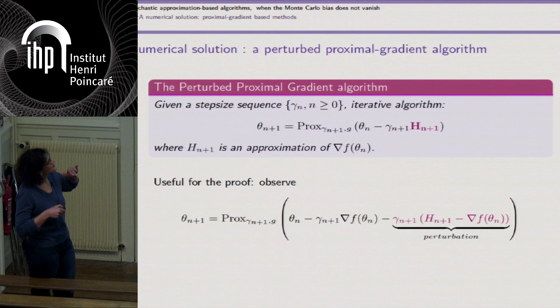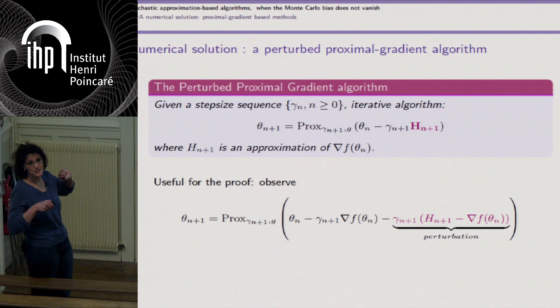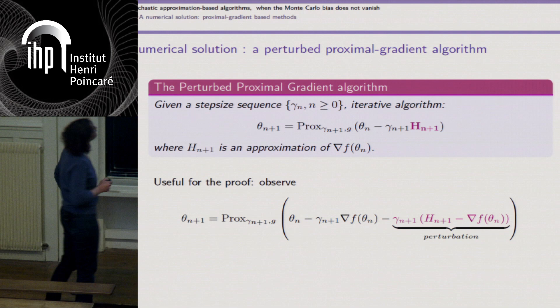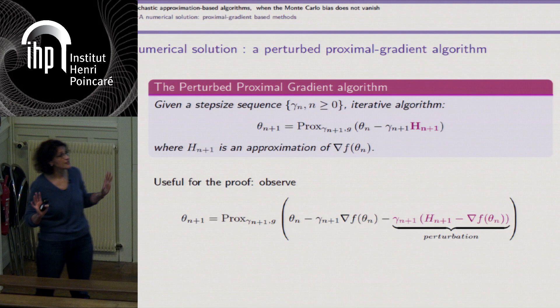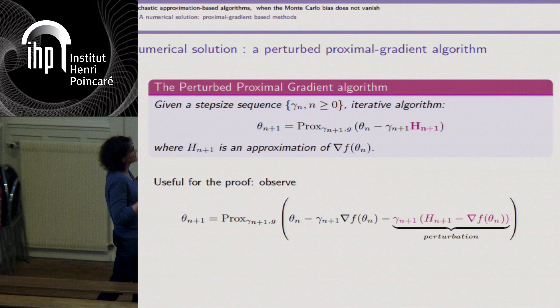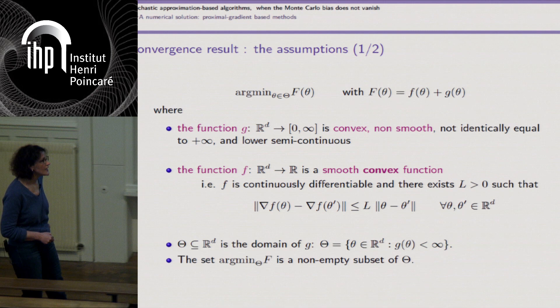For the theoretical study, you see each iteration as the exact one plus a perturbation term: before applying the proximal operator, you have a perturbation given by the step size multiplied by the error when approximating the gradient. I do not specify what the approximation is — it may be a deterministic approximation of the gradient. I just say it is some approximation.